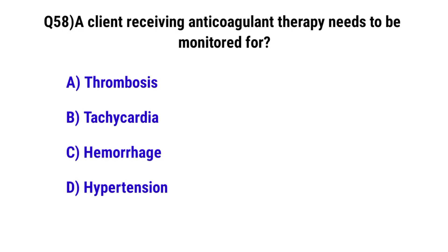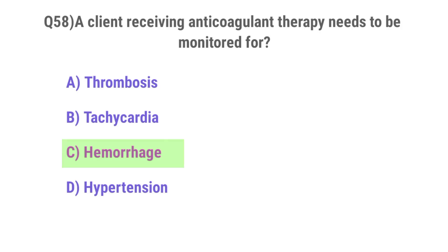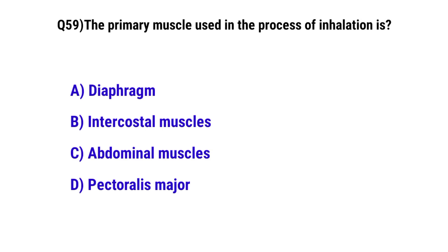Question No. 58: A client receiving anticoagulant therapy needs to be monitored for — the correct option is C: hemorrhage. Question No. 59: The primary muscle used in the process of inhalation is — the correct option is A: diaphragm.